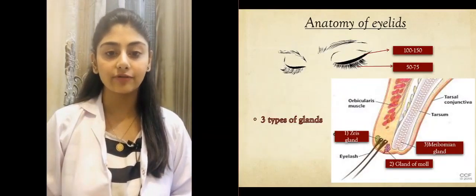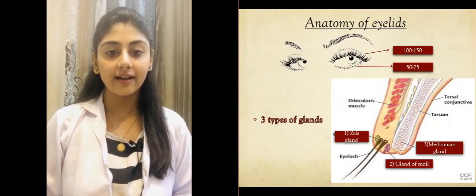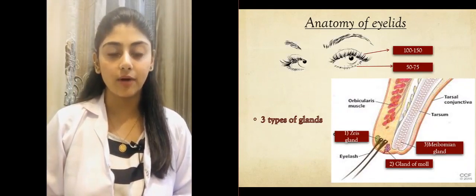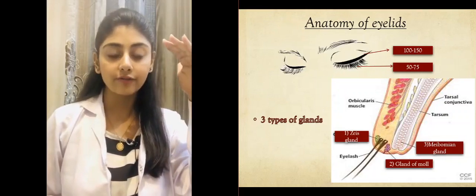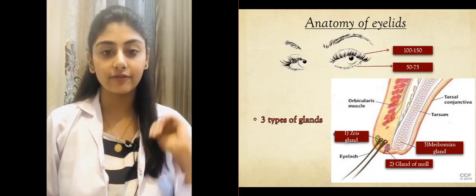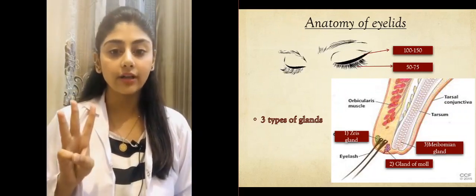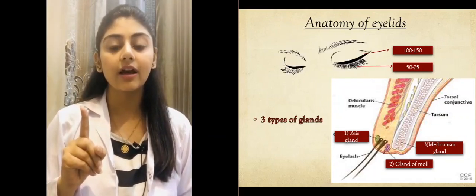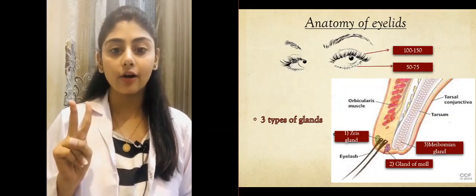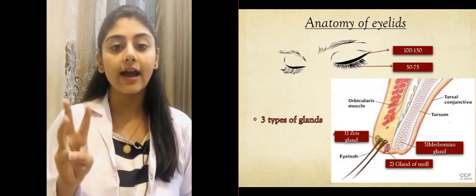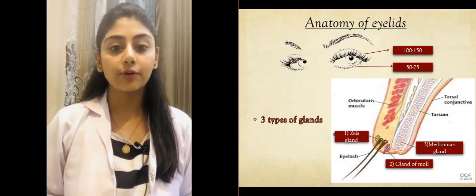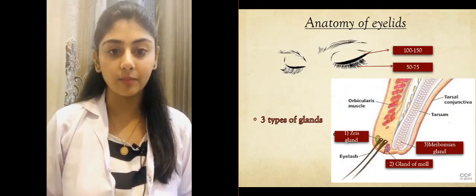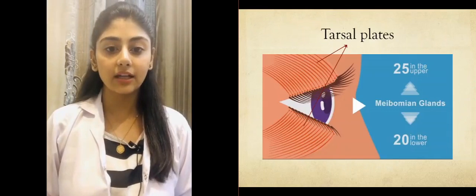First, we need to learn about the basic anatomy. Both of our eyes contain eyelashes arranged in two to three rows along the lid margin — 100 to 150 in the upper eyelid and 50 to 75 in the lower lid. There are three types of glands: the gland of Zeis, which is the oil-producing gland present anteriorly along the lash follicle; the gland of Moll, which is the sweat-producing gland; and the meibomian gland, which produces the oily component of the tear film. They are arranged vertically along the tarsal plates, which are deep connective tissues that provide structural support to the eyelid.